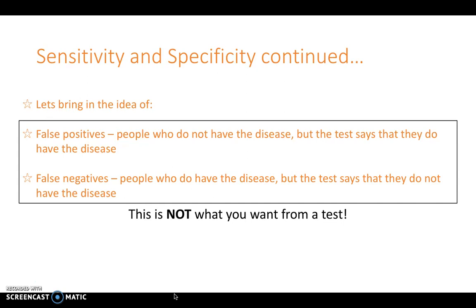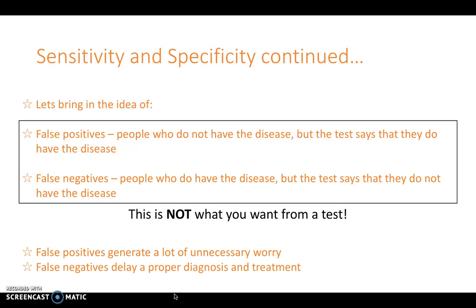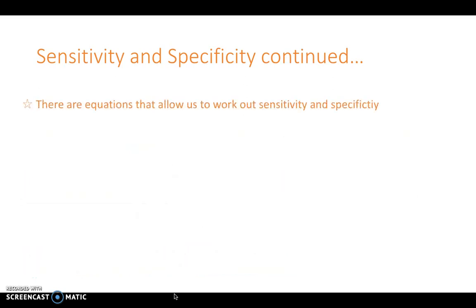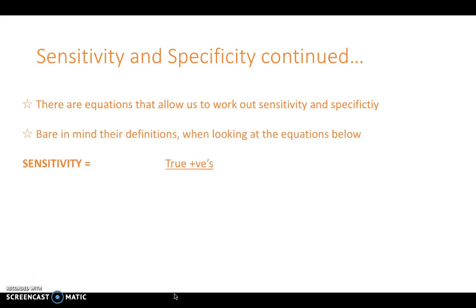Why don't you want a false positive? Because it generates a lot of unnecessary worry — it tells someone they have a disease when they don't. False negatives do the opposite: they delay proper diagnosis and treatment, putting people's minds at rest when they actually do have the disease. The equation for sensitivity is: true positives divided by true positives plus false negatives.